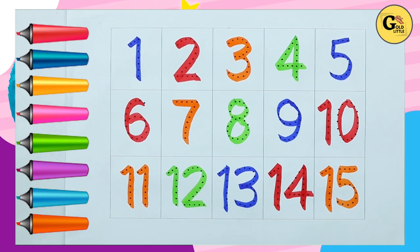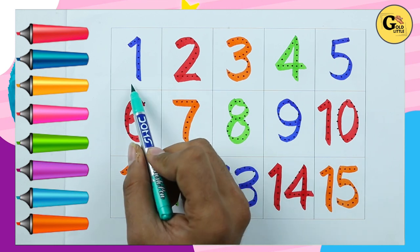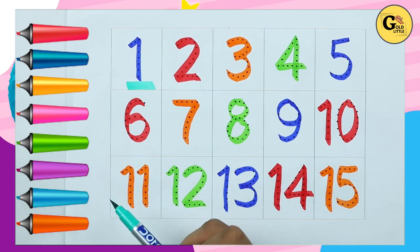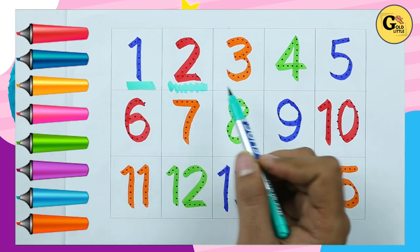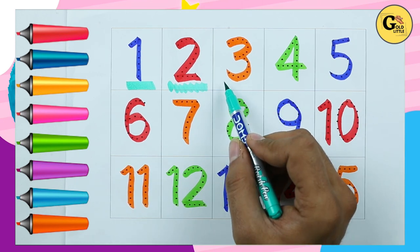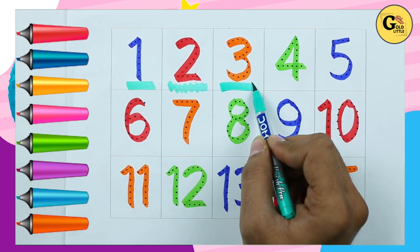Hello friends, today we learn numbers with colors. 1, 2, 3, 4, 5, 6, 7, 8, 9, 10, 11, 12, 13, 14, 15. It's number 1 with blue color, number 2 with red color, number 3 with orange color.